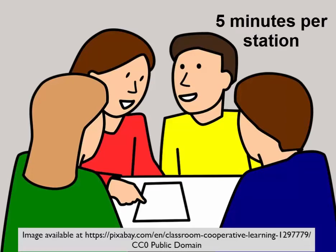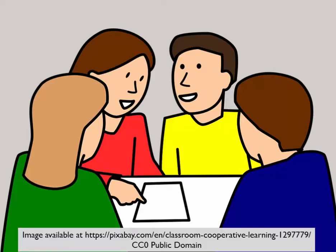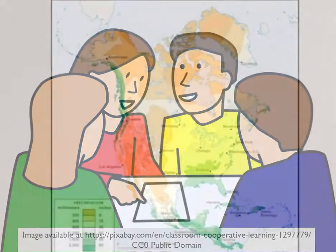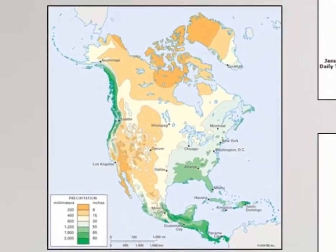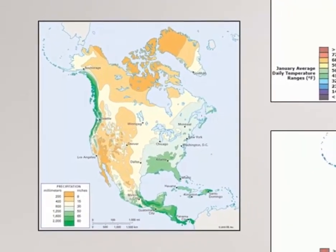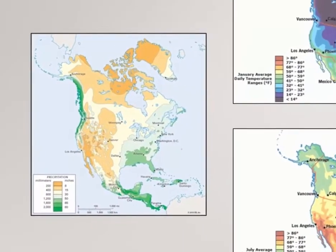Five minutes at any one station is plenty of time. It is best to leave these charts displayed around the room throughout the unit so that students can easily revisit the images and add new thoughts to the charts. Teachers may consider using the first five minutes of class time each day to have students add new thoughts to one of the charts. In the following days, students will examine different types of maps and use the information provided by the maps to make further predictions about how American Indians in different regions lived.